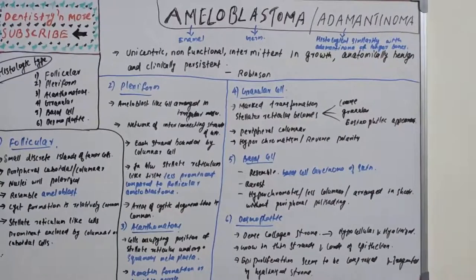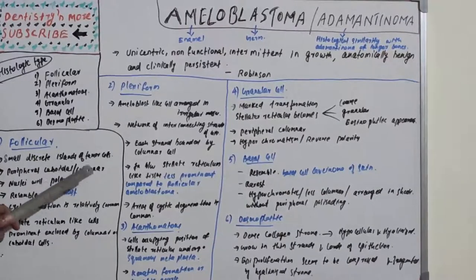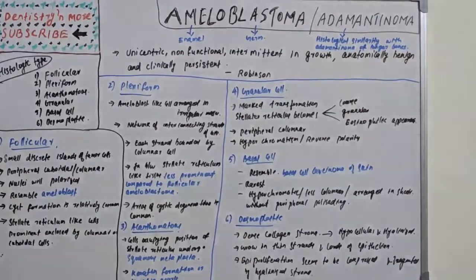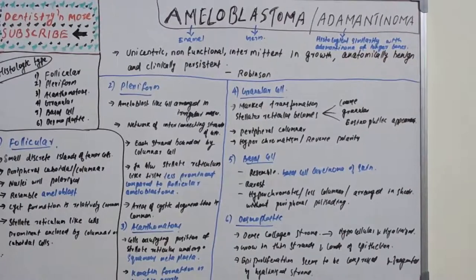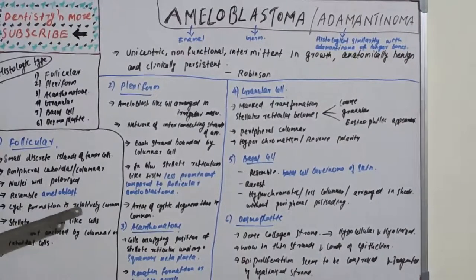In the follicular pattern: small discrete islands of tumor cells with peripheral cuboidal or columnar cells whose nuclei are polarized, resembling ameloblasts — the enamel-forming cells. Stellate reticulum-like cells are prominently enclosed by columnar or cuboidal cells, and cyst formation is relatively common in the follicular type.